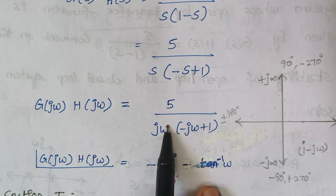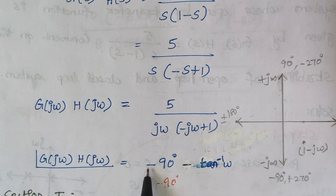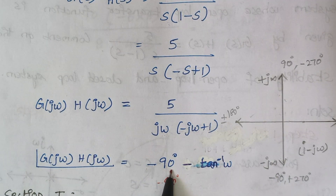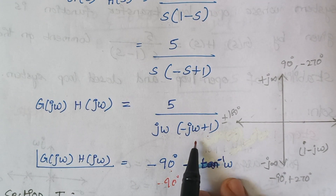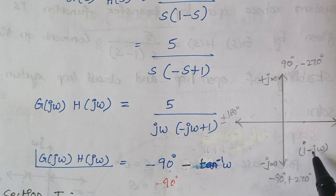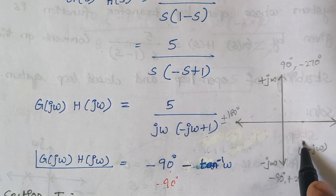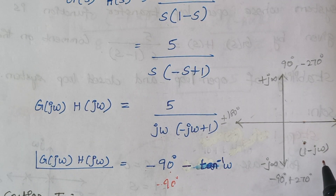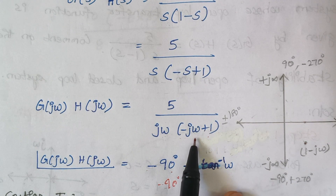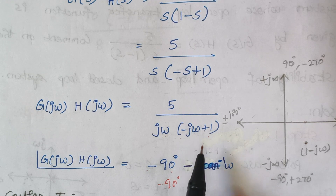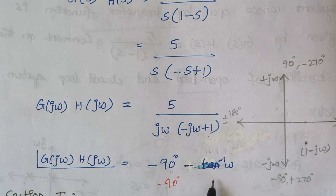The omega term in the denominator contributes 90 degrees; moving it to the numerator gives minus 90 degrees. The term 1 minus j omega lies in the fourth quadrant, with real part 1 and imaginary part minus j omega. When written as a denominator, it contributes tan inverse of omega, which becomes minus tan inverse omega when moved to the numerator.